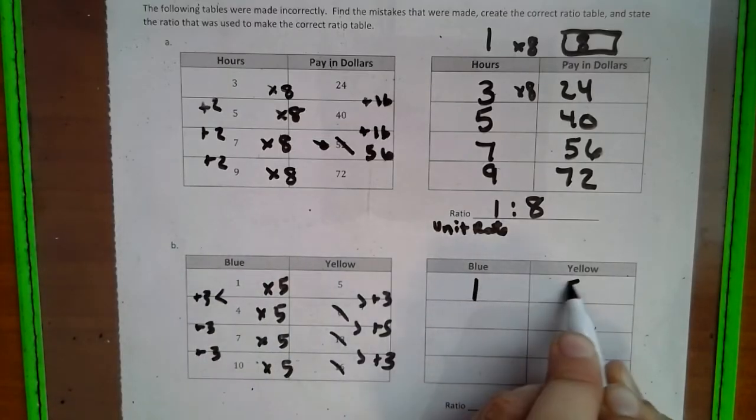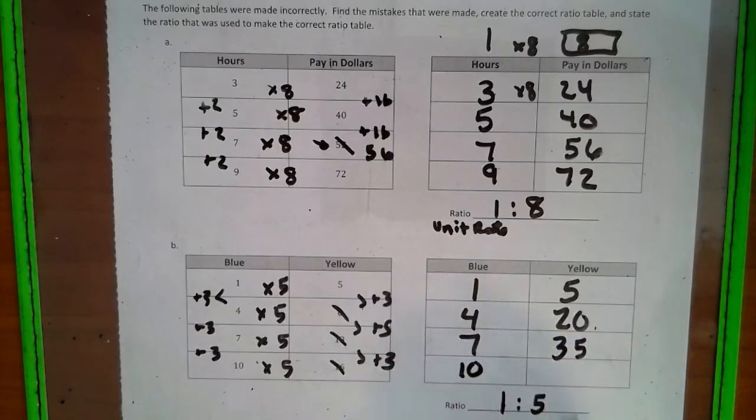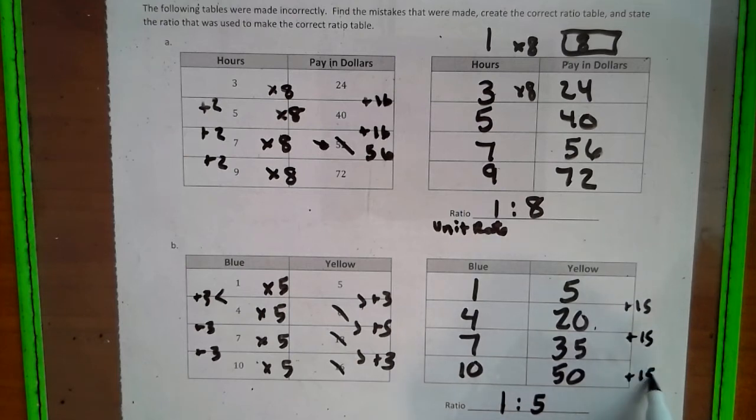So 1 goes to 5 by 5. 4 times 5 would be 20. 7 times 5 would be 35. And 10 times 5 would be 50. Keeping this pattern here of adding 3, over here would be the adding of 15, if you notice, so that you can easily find the next ones in the sequence.